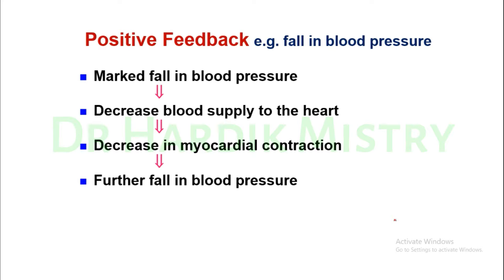Having covered the negative feedback loop, we now begin with the positive feedback loop. For example, a fall in blood pressure illustrates the positive feedback loop. In the negative feedback loop there is a negative response that stops the process, but in the positive feedback loop once a procedure begins it progresses to a level of severity.